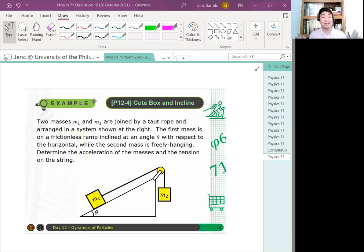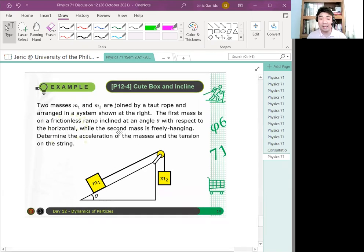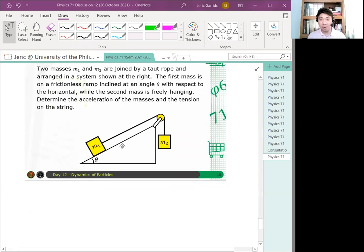Determine the acceleration of the masses and the tension in the string. So again, what you want to determine are two quantities: the acceleration and tension. There are two quantities. Therefore, you need at least two equations to get a unique solution. So, as usual, we draw a free body diagram.